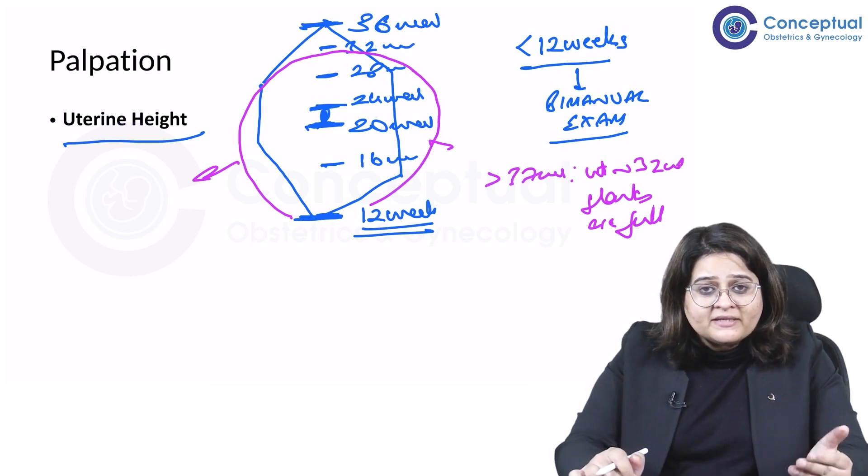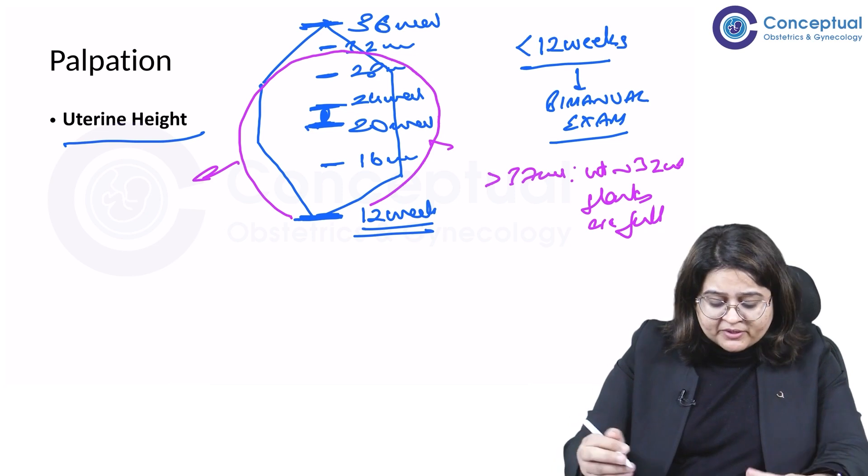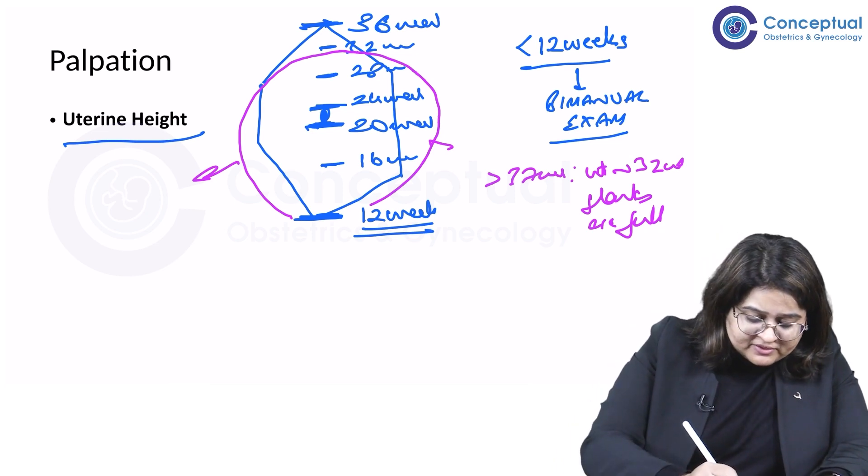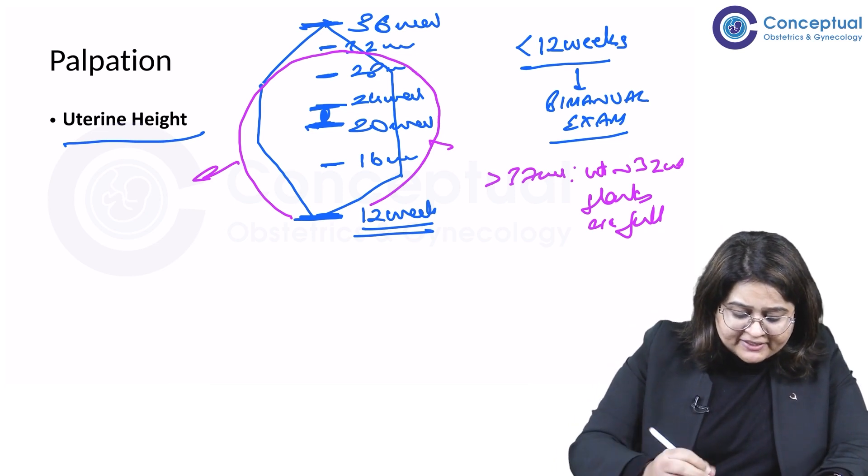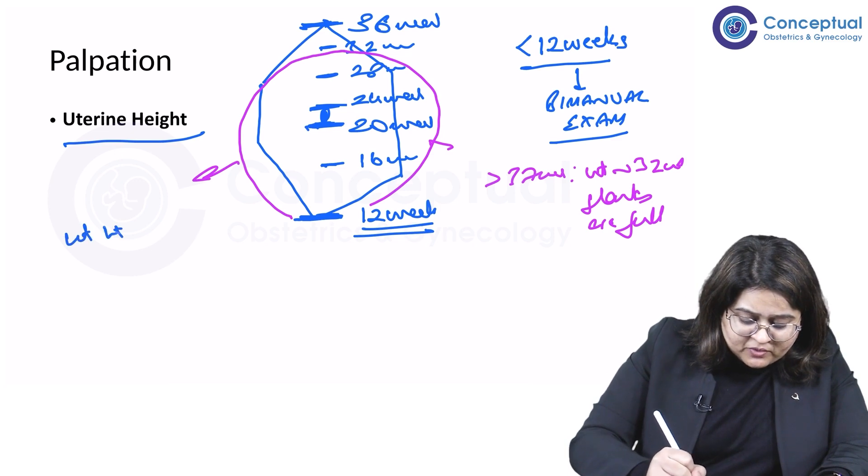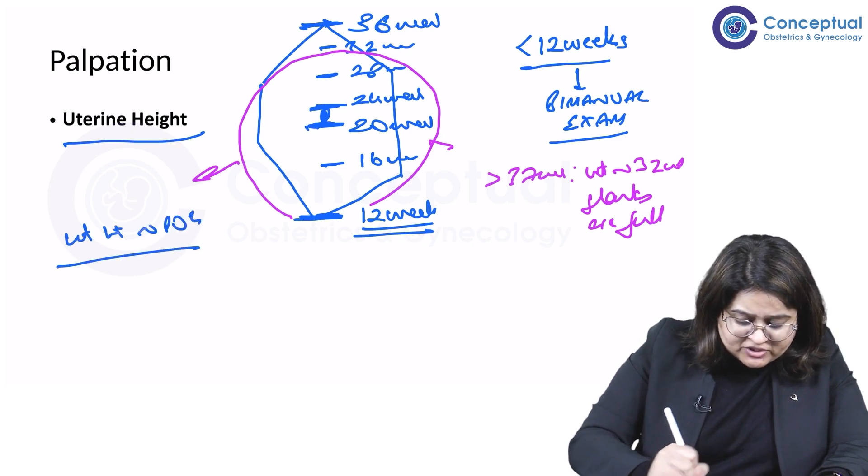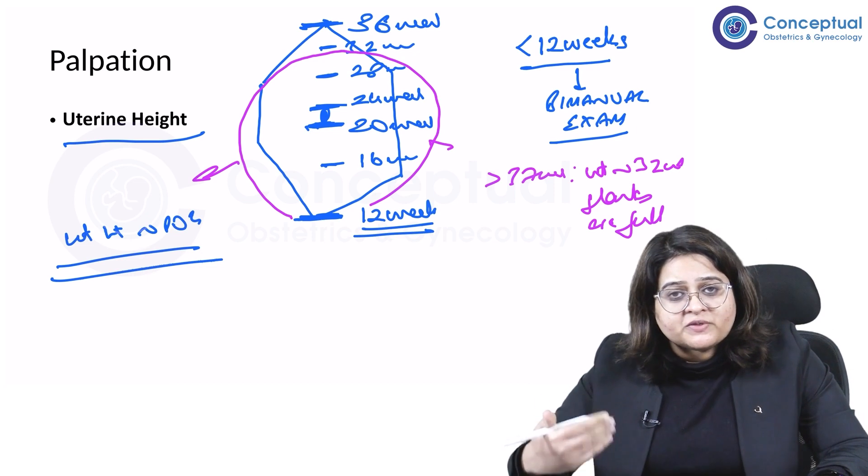Now why is this important? Why is the uterine height important? Because number one, ideally the uterine height should correspond to the period of gestation. What does this mean?